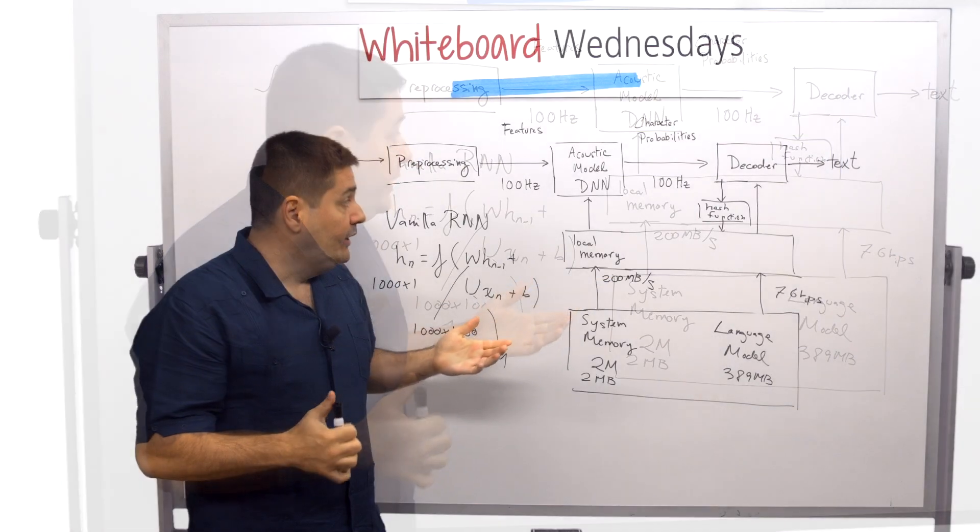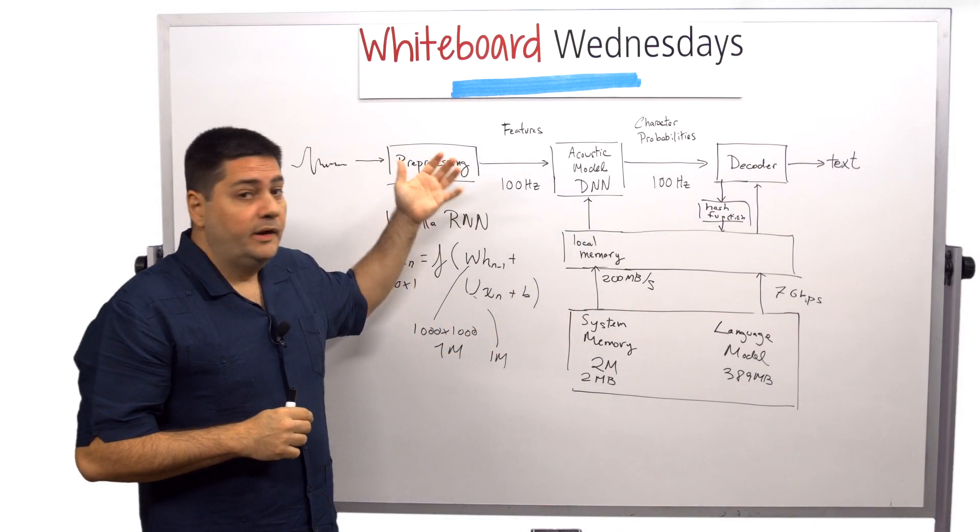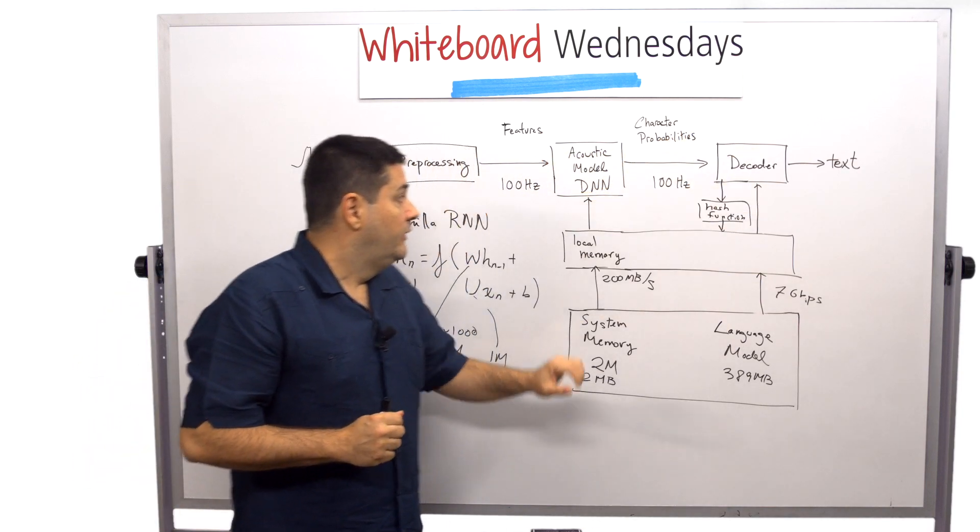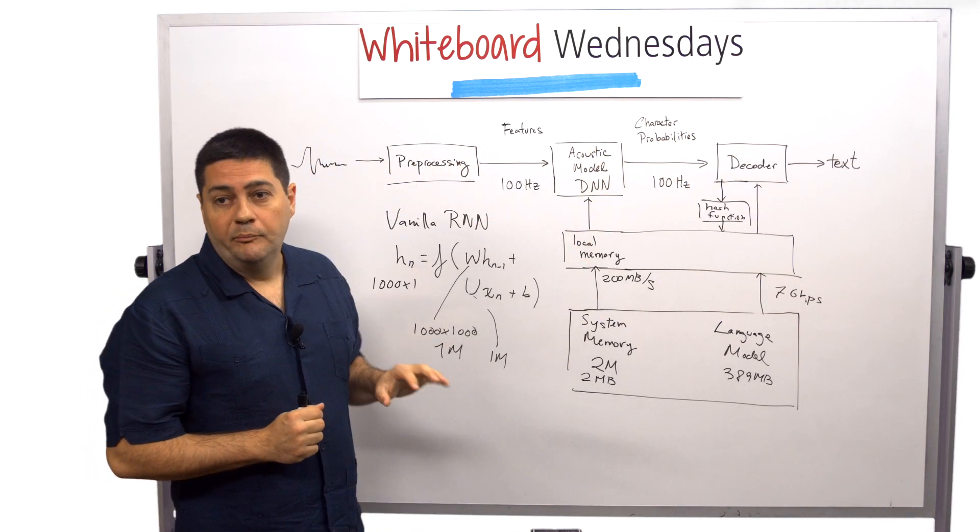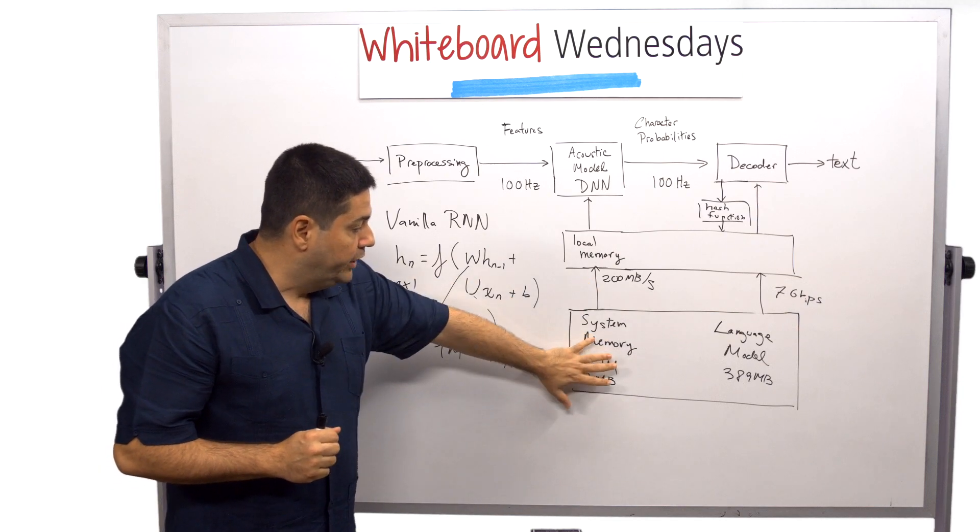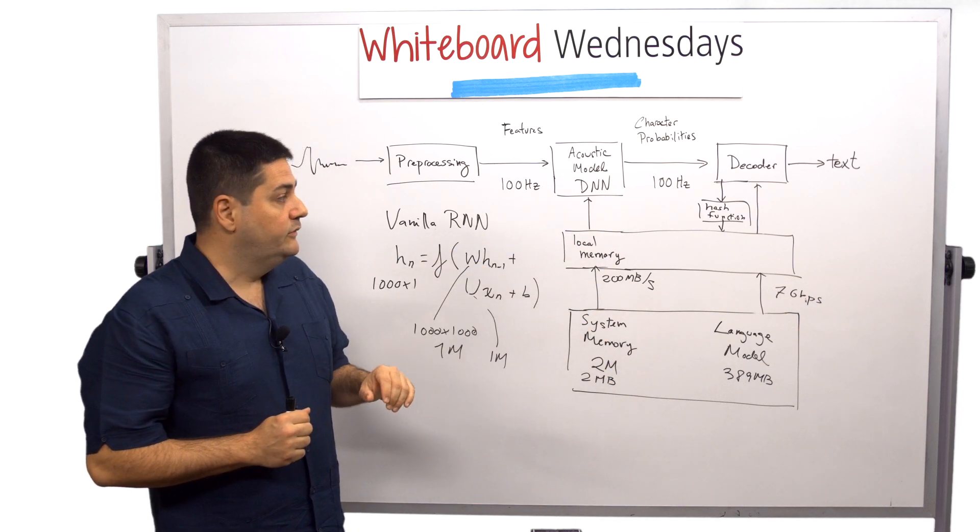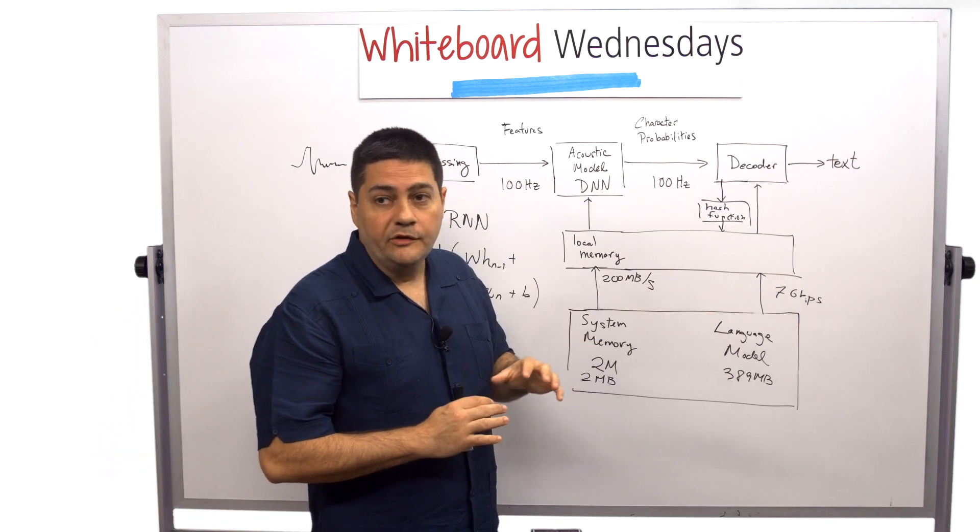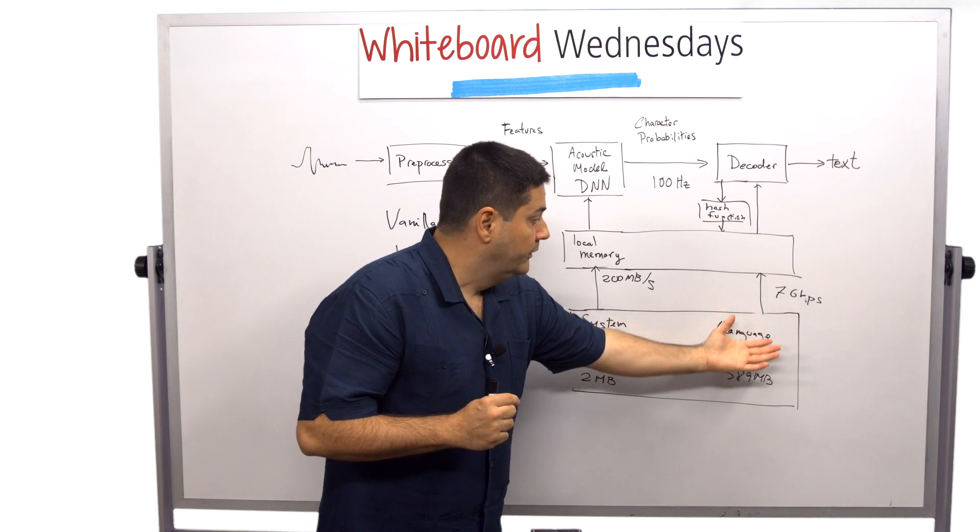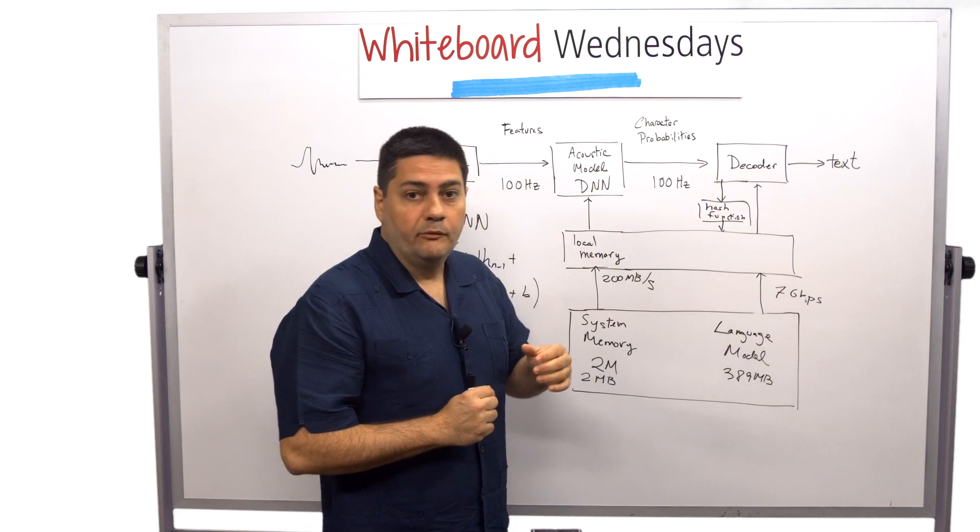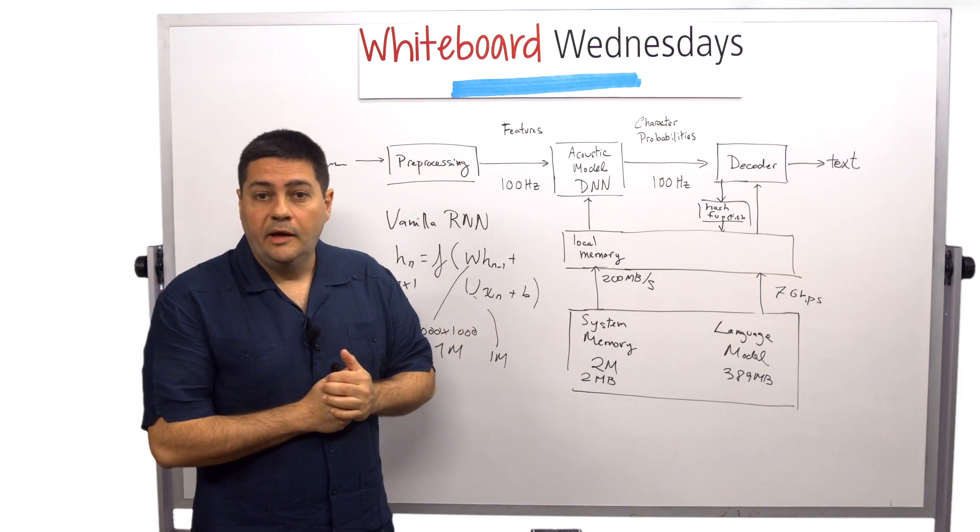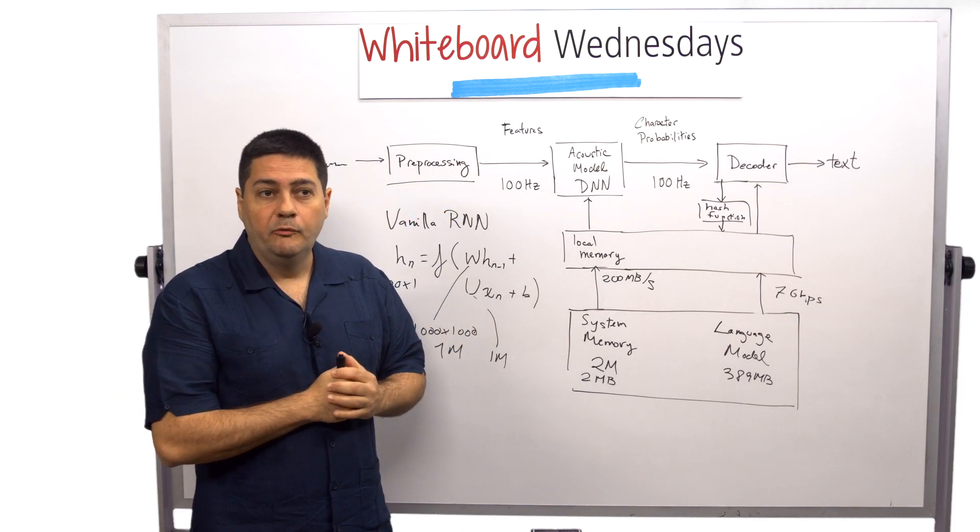So today we've seen an example of an ASR system and the different types of challenges in the different blocks. This block has a high computational complexity and kind of a high requirement for storage and memory access. For the decoder, computational complexity is not as high, but the memory requirement is much higher and also the memory access bandwidth is high. So thank you for watching and we'll see you at the next Whiteboard Wednesday.